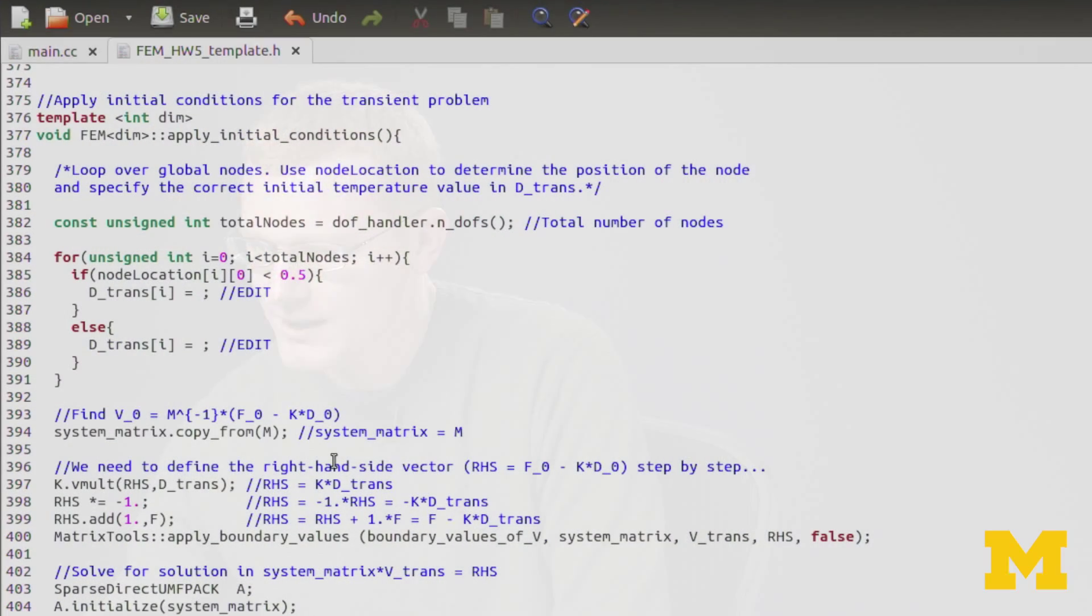Now in this segment, we'll move on to looking at solving the transient heat conduction problem in the Homework 5 template. If we look over here, now that we're solving the transient problem, we have to apply initial conditions. And I've actually set up most of this for you. What we need to do is we loop through all of our nodes, and we check the position of each node.